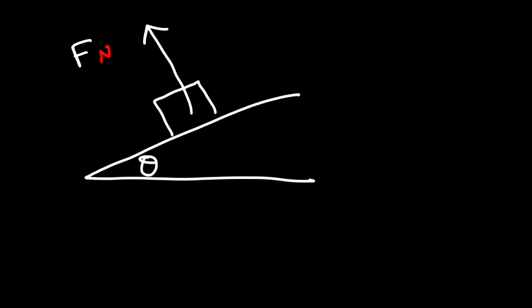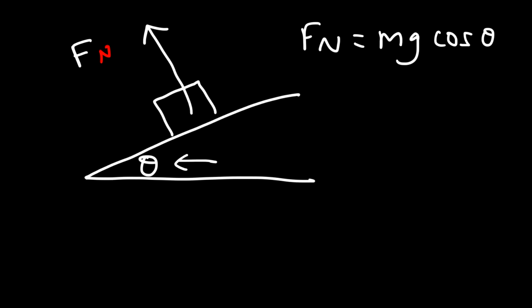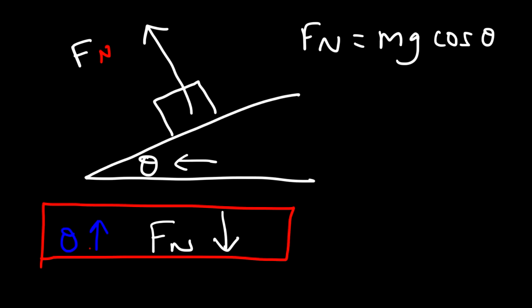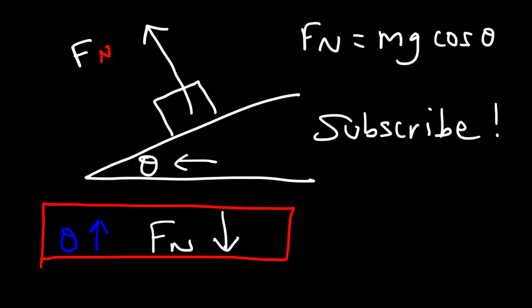For a block on an incline, the normal force is perpendicular to the surface and equals Fn = mg·cos(θ), where θ is the angle of the incline. As the angle increases from 0 to 90 degrees, the normal force decreases. Links to a derivation video and related problems are in the description. If you found this video helpful, please subscribe to the channel. Thanks for watching.